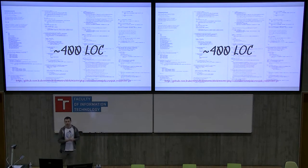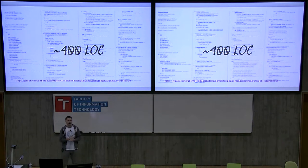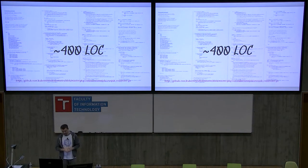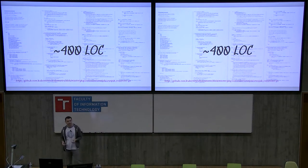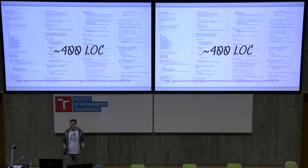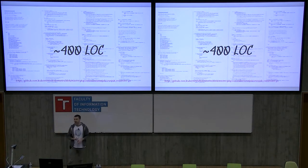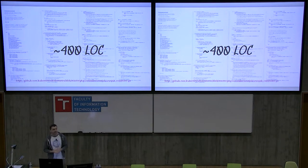Unfortunately, you should not be taking the cron job controller as a good example, and I'm going to explain why it's a bad idea. I wrote originally two controllers in Kubernetes. I wrote both the job and cron job controllers — that's why cron job is a bad example and you should not be looking at it. Job is much better, though it's a little bit more complicated.